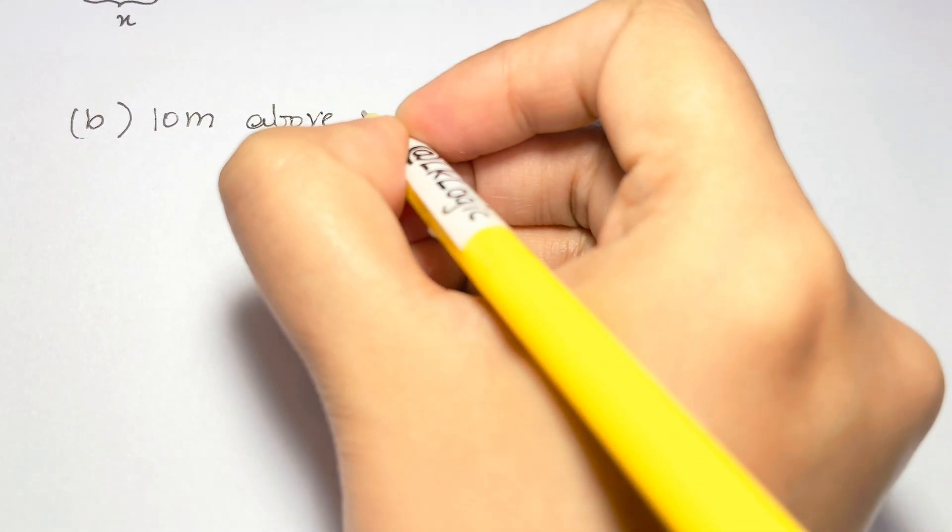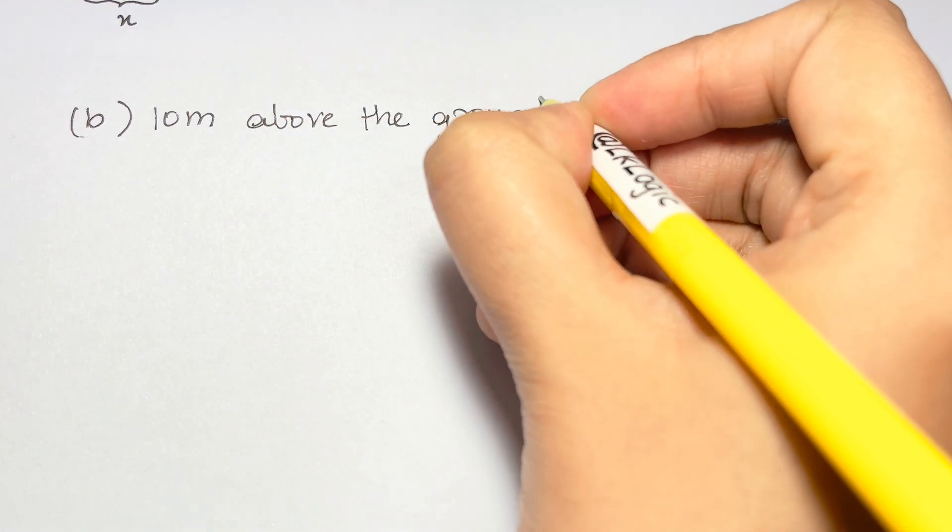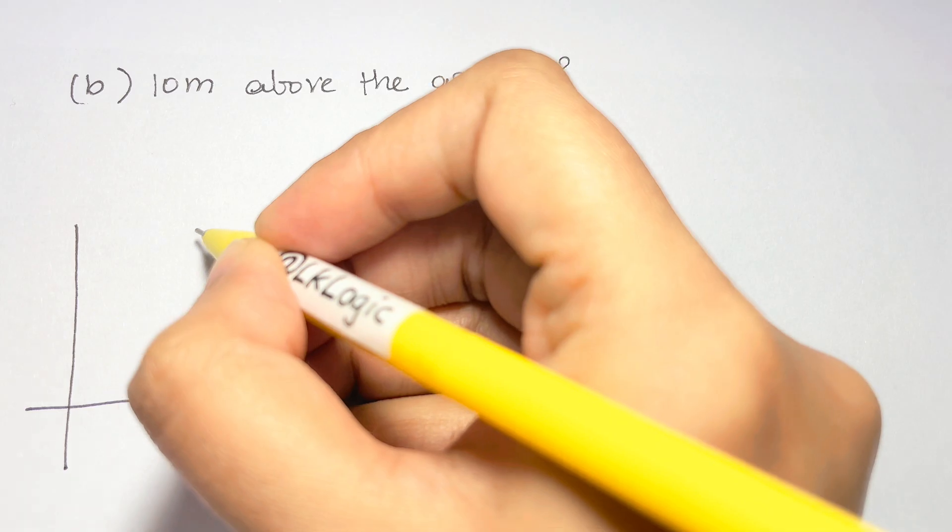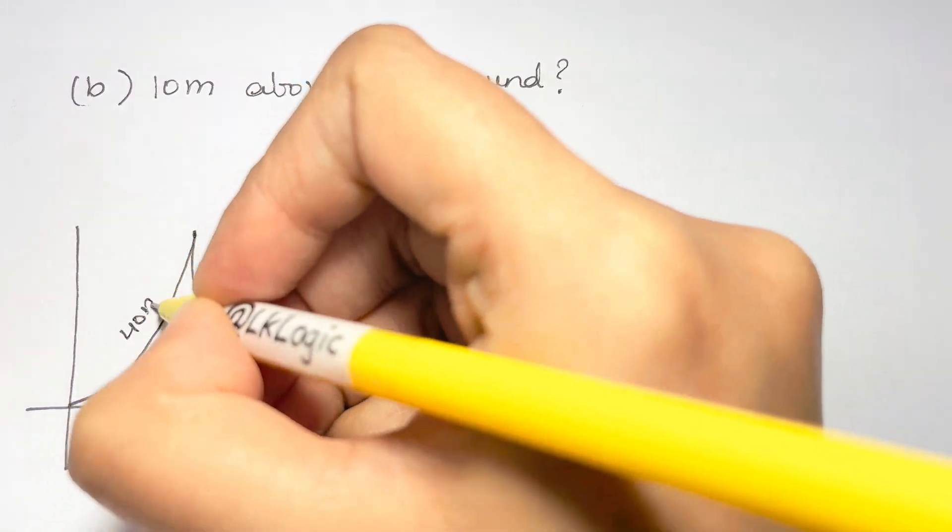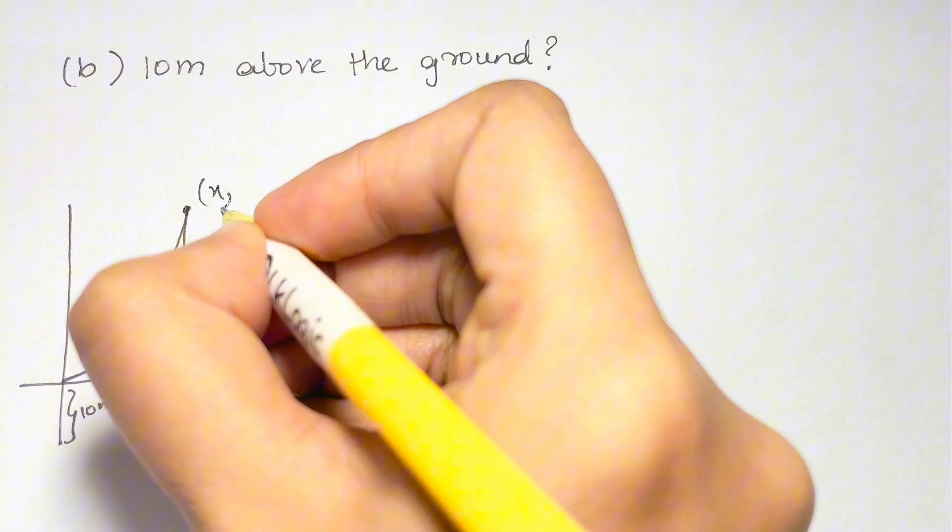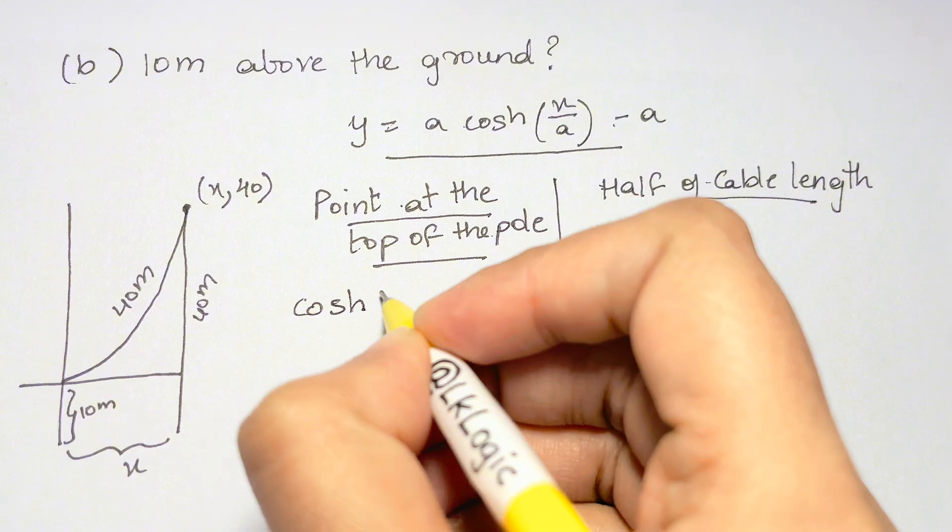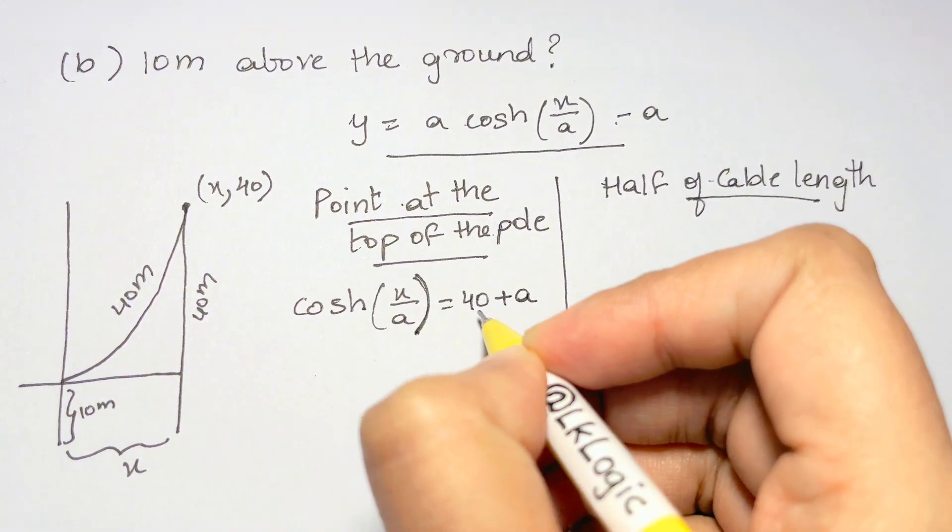So now how do we solve the next problem? What if the cable is only hanging 10 meters above the ground? Suppose you try and go through the same exact method. At this point the top of the pole will be at the point x comma 40, so we'll use the same equations and we'll substitute in the new values from this particular case.